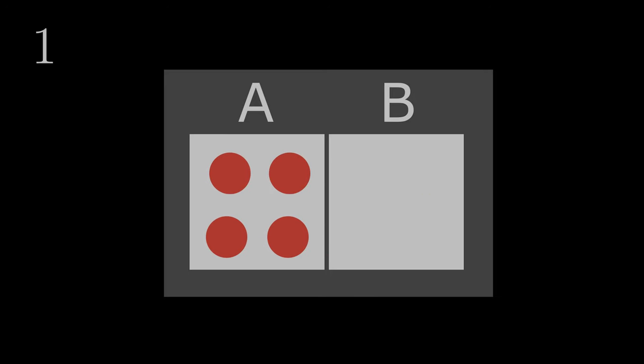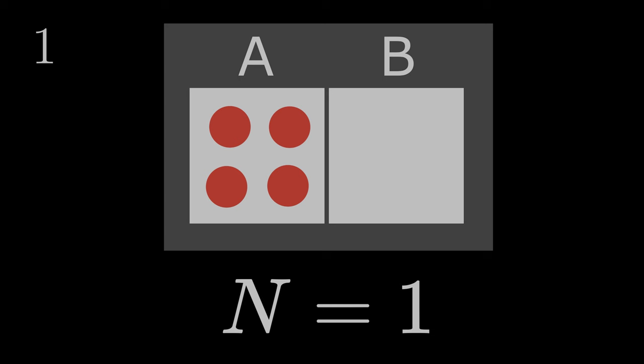Let us construct a system in which no particles can be in subsystem B. All four particles must be in subsystem A. In order to make a statement about the entropy of this system, we must consider the number of possible states. The system was constructed such that all particles can only be in A, so there is only one microstate: all particles in A.